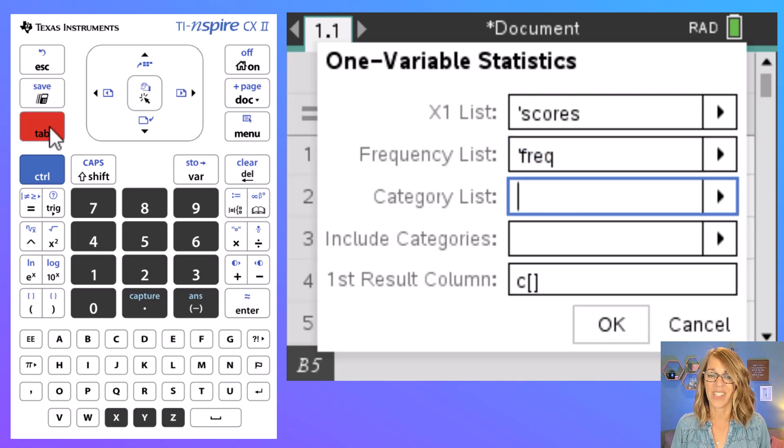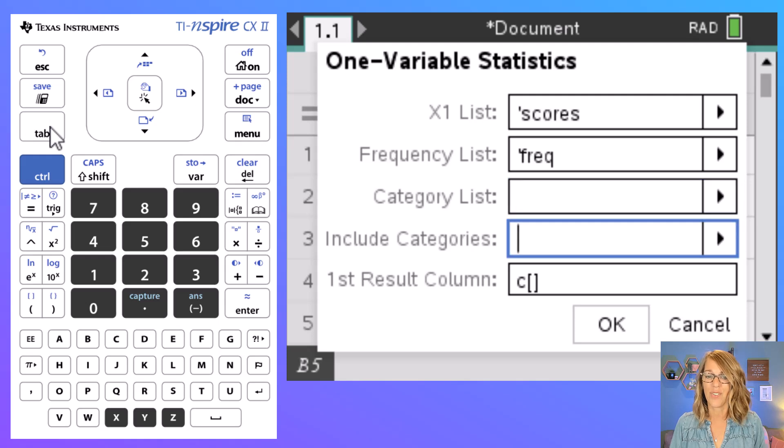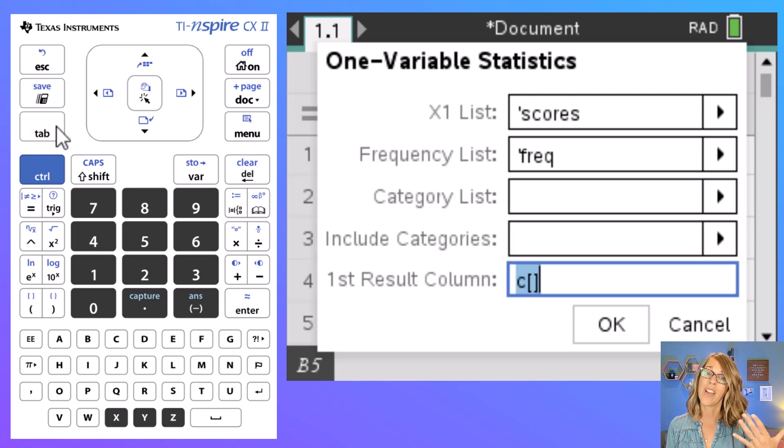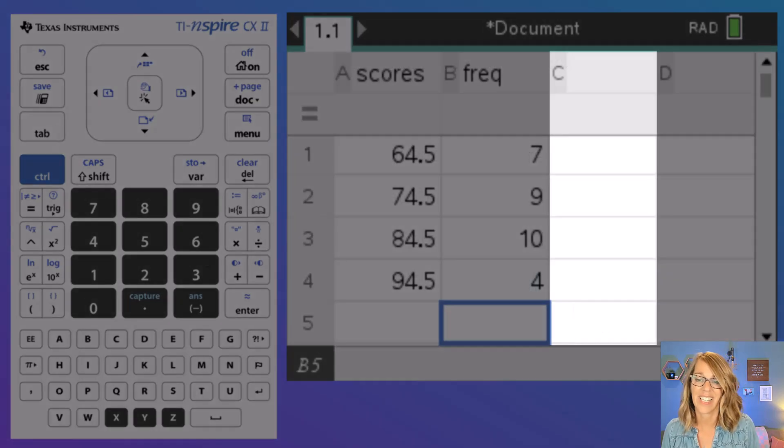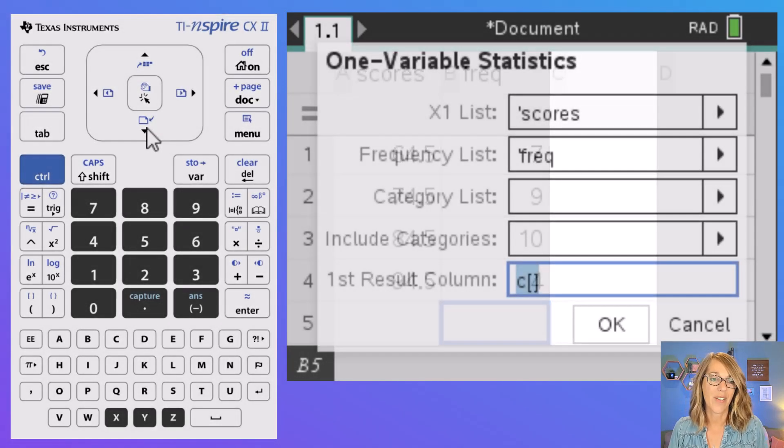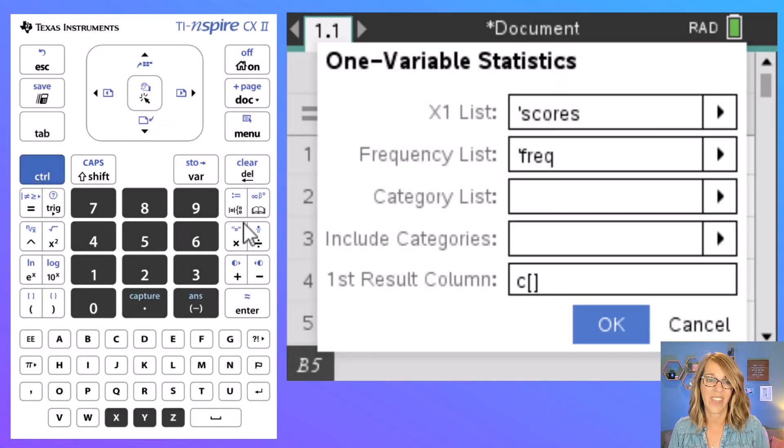I'm going to tab down to the other choices. I don't need the next two choices. The last choice is where it's going to start putting your results from one variable stats and the c column is fine. I don't have anything in that c column. So I'm going to arrow down just one more time and then hit enter.